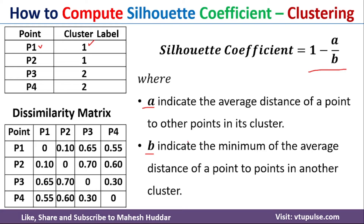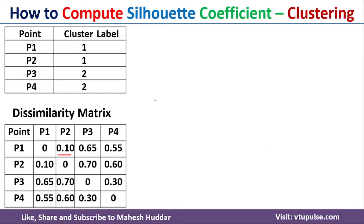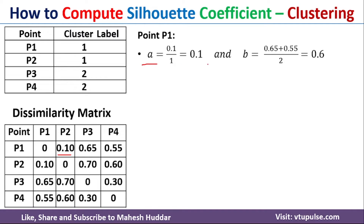Once you know the values of a and b, we can plug them into the equation to get the silhouette coefficient. Now we will calculate the silhouette coefficient for each point. First, consider point P1. To calculate the silhouette coefficient, we need a and b. a is the average distance from P1 to all other points in the same cluster. Apart from P1, there is only one point in cluster 1, which is P2. The distance from P1 to P2 is 0.1, divided by 1 since there is only one point, giving a = 0.1.